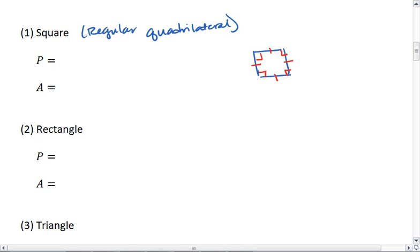If we have four congruent sides, then each side is the same. So here we're going to let s represent side length. And so the perimeter of a square is 4 times s, because we have s plus s plus s plus s, or four s's.